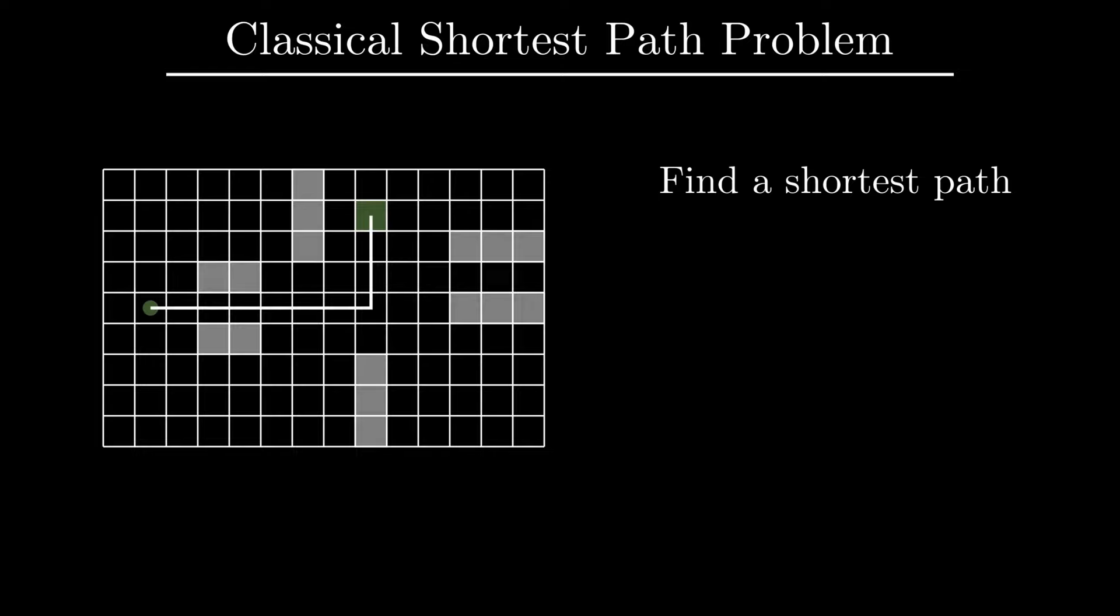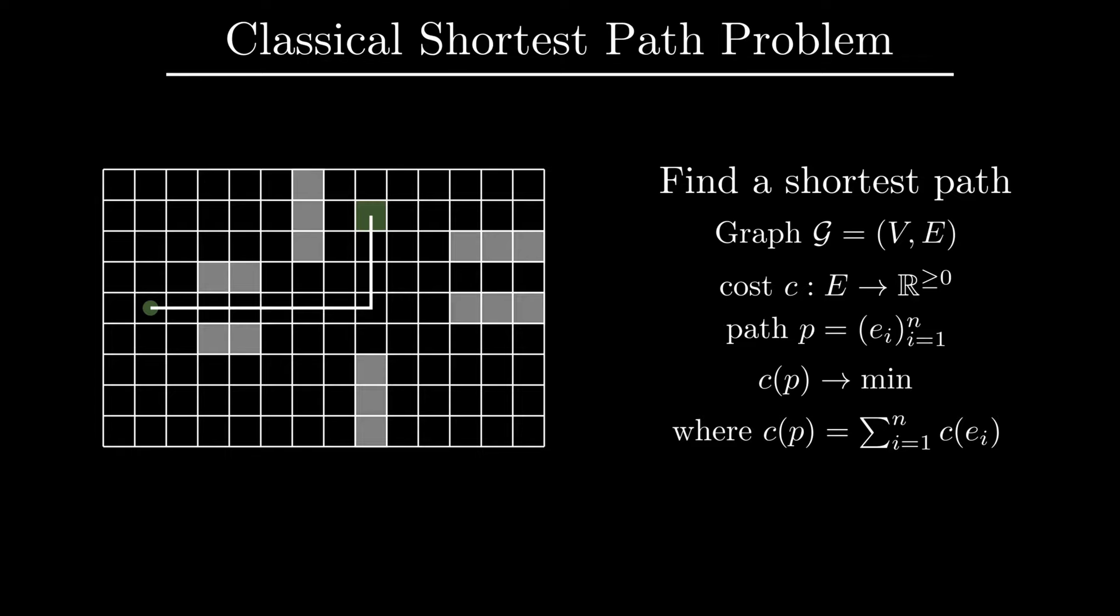More abstractly, we can formulate it as follows. Given a graph G with two distinguished vertices, called the root and the goal, and a cost function C, which assigns a non-negative real to each edge, we need to find a path from the root to the goal that has the smallest cost, where the cost of a path is defined to be the sum of costs of its edges.